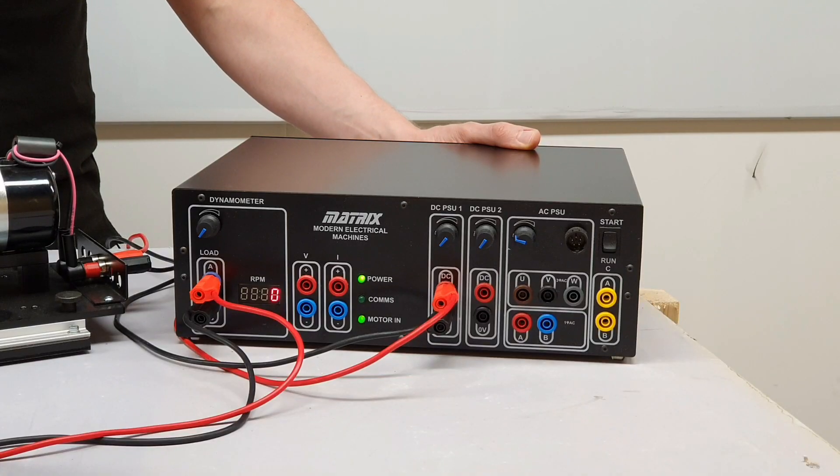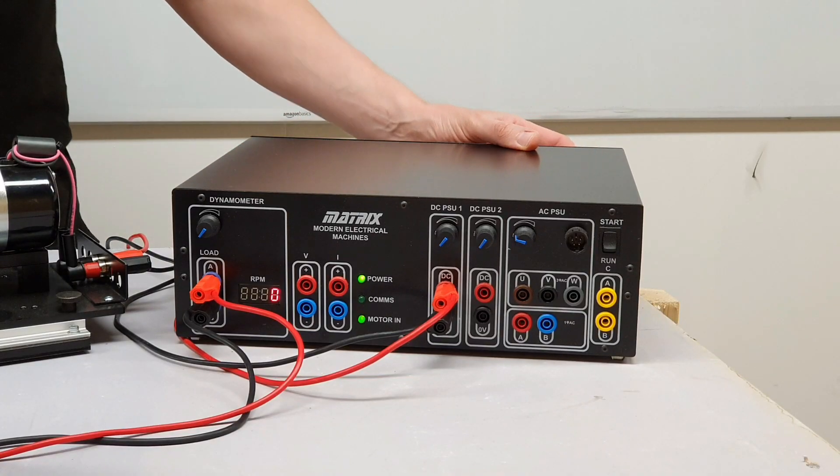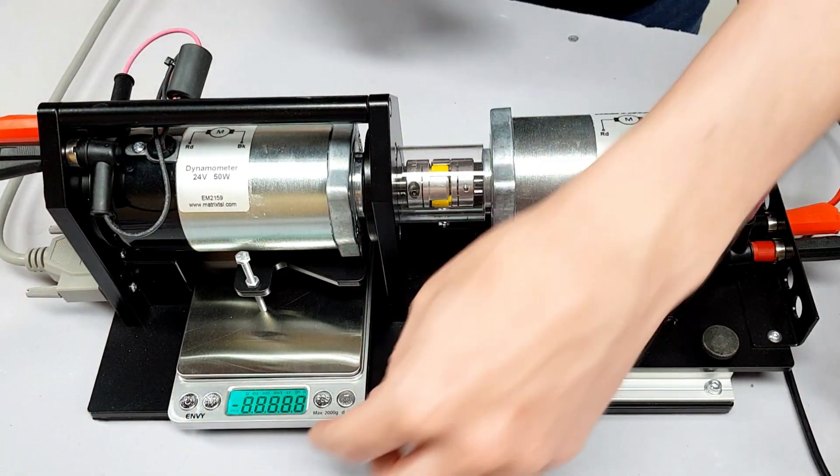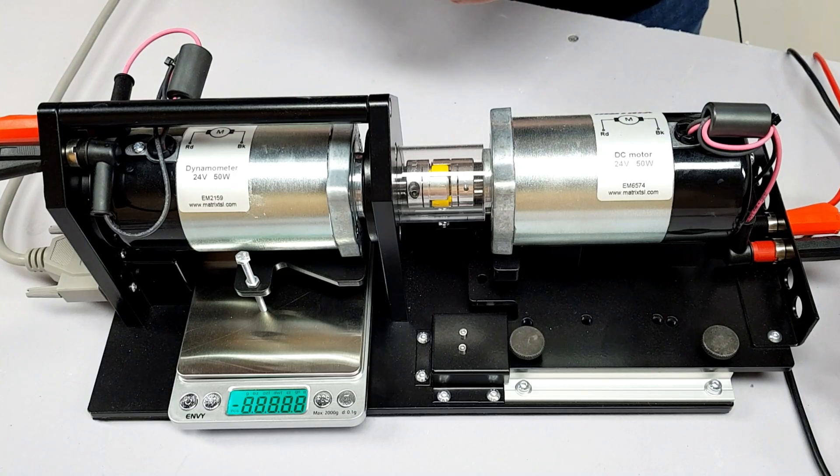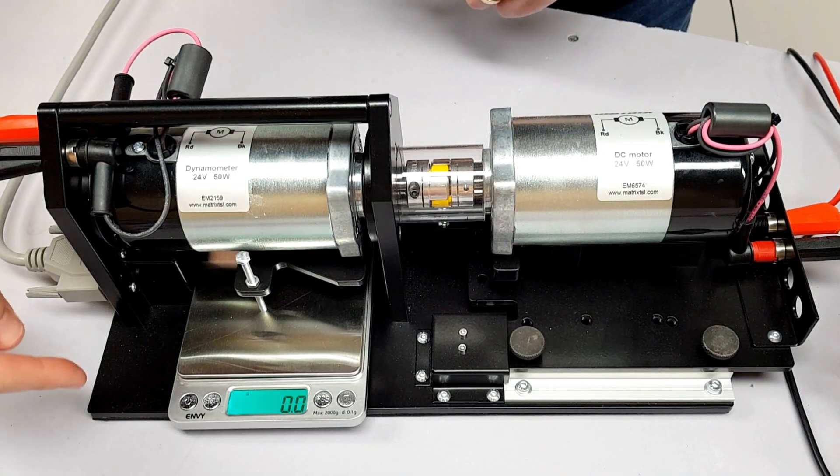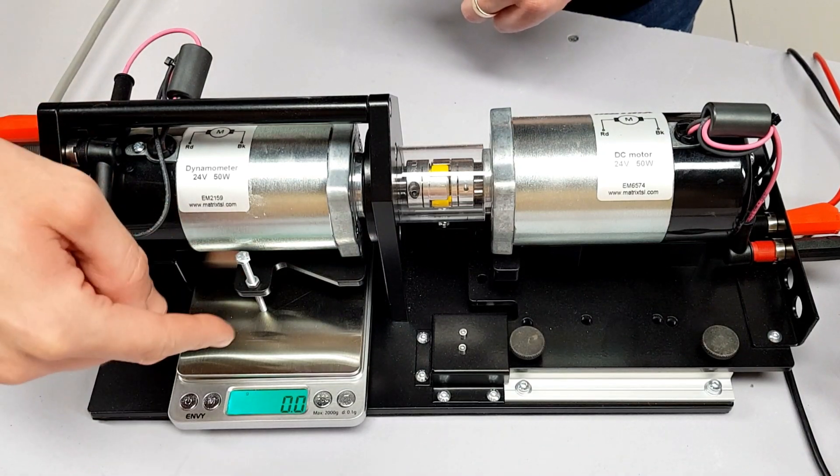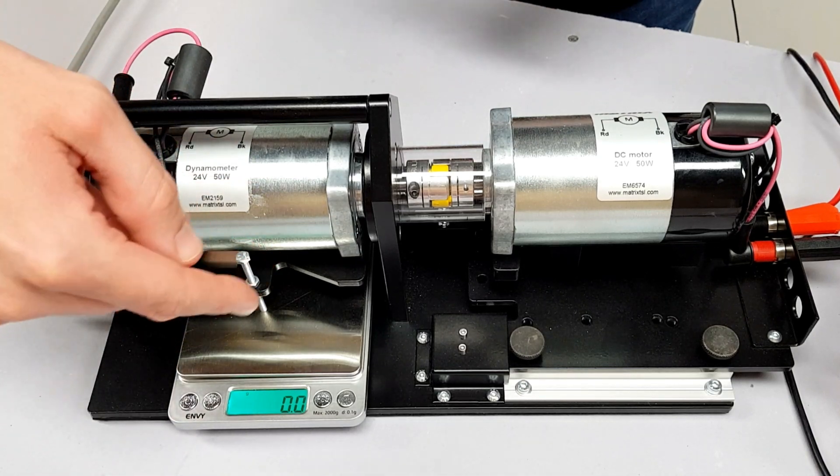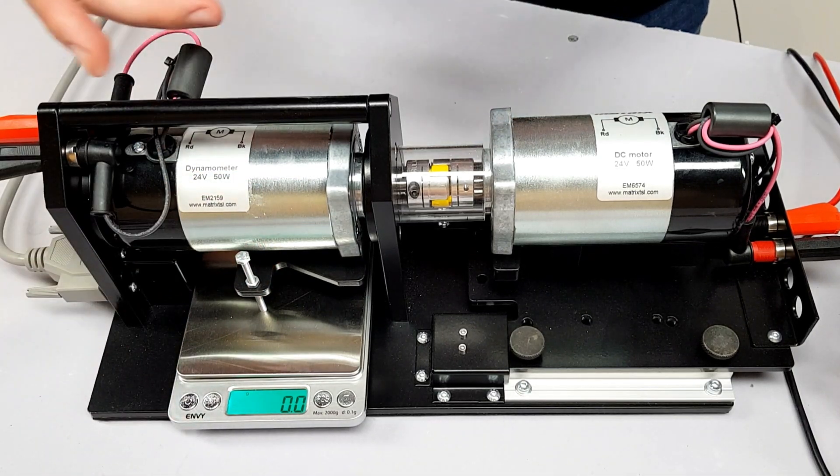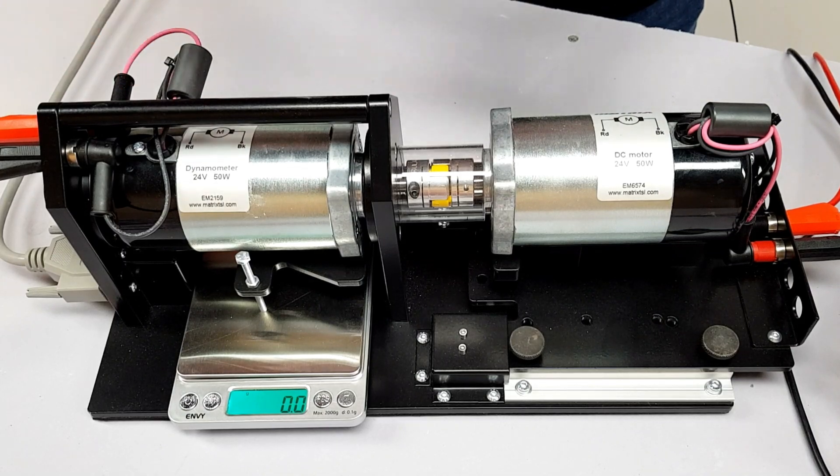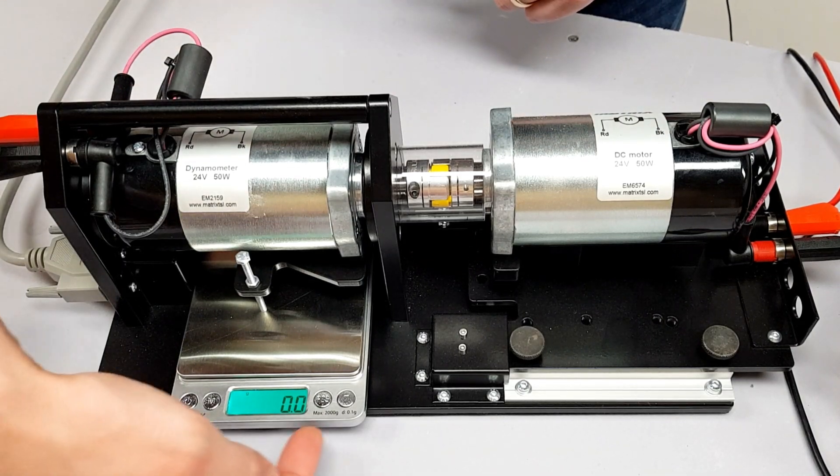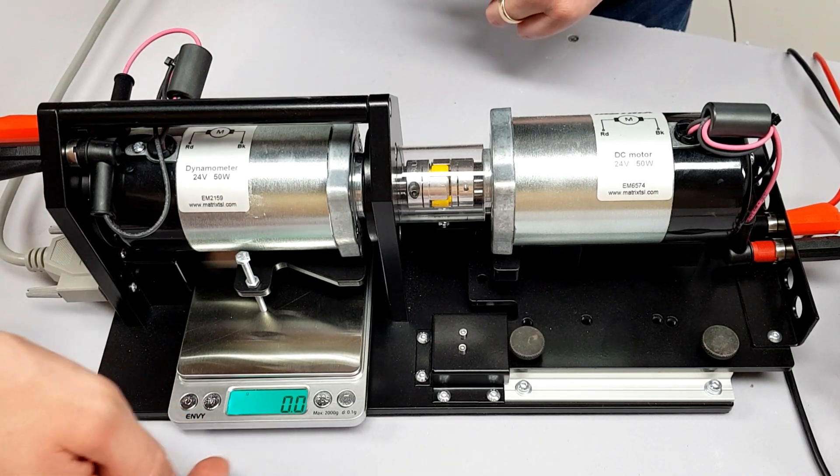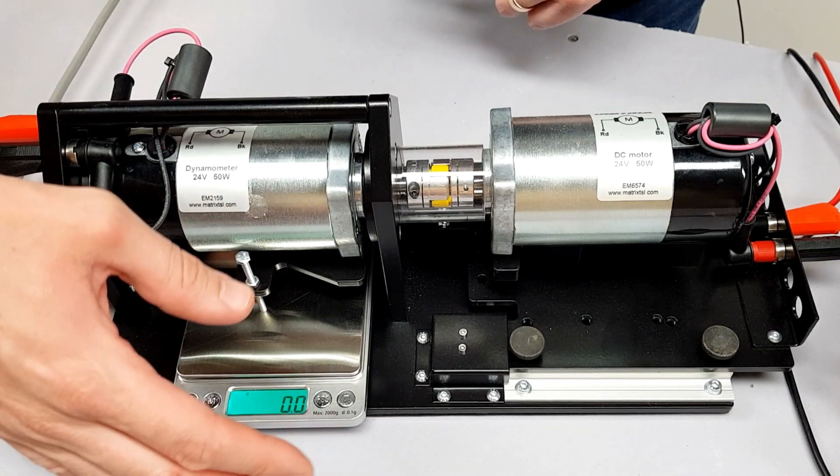There we go. So we've got that powered on now and we're just going to turn the scale on. From this scale we're going to get a measurement of the mass that this is measuring, and if you remember in a previous video, we learned how to change that from a reading of mass into a reading of force. So what we may find is that this may just start to drift a little bit from the zero setting that we've got here. It might just go up or down a little bit, but we're not going to worry too much about those values.